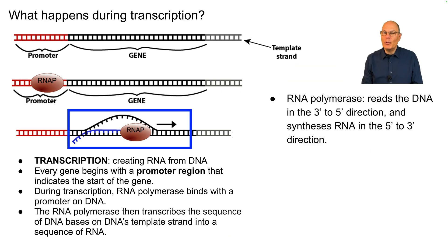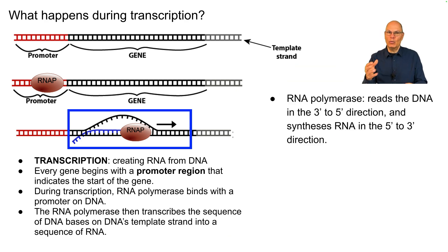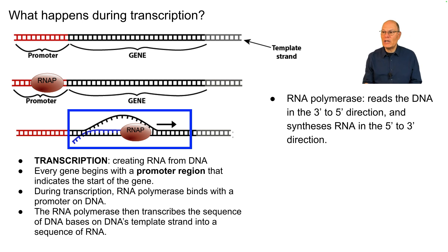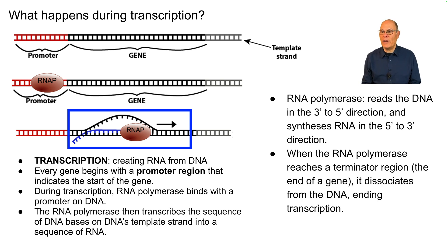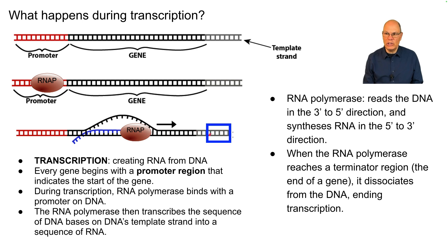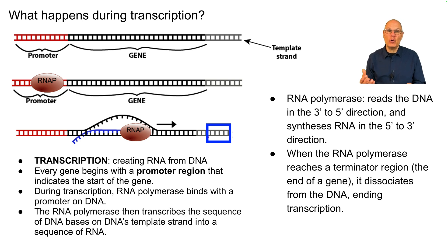RNA polymerase, like all enzymes involved in working with DNA, reads the DNA in the 3' to 5' direction and synthesizes new RNA in the 5' to 3' direction. When the RNA polymerase reaches a terminator region at the end of the gene, it dissociates from the DNA, ending transcription.